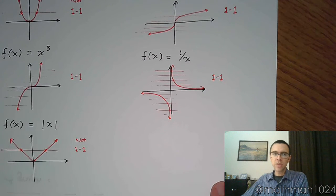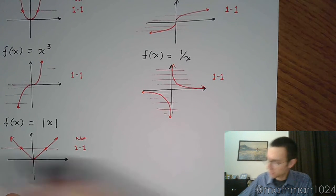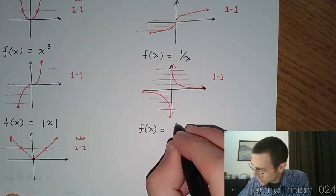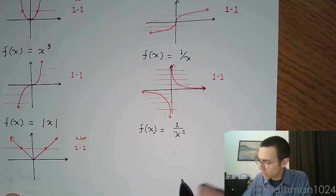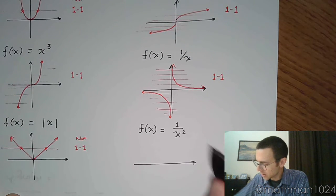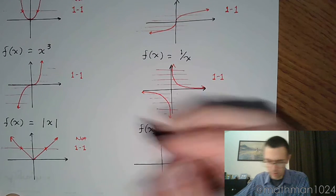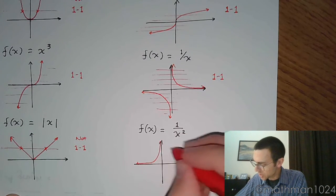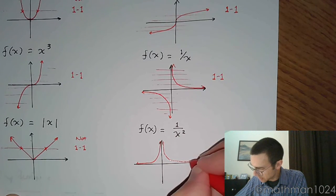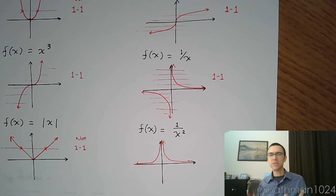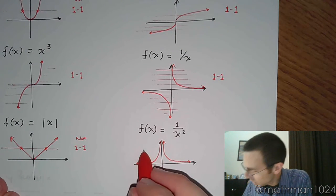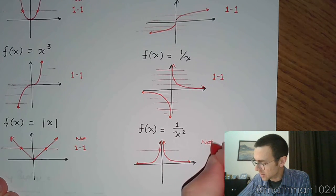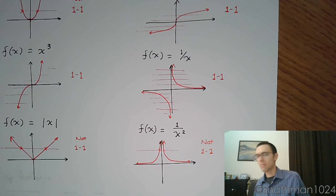And the last guy that we had, the last of our parent functions, was the reciprocal squaring function: f(x) equals one over x squared. His shape is that volcano shape. And I think it's pretty easy to see that this guy is not going to be one-to-one. You draw a horizontal line, and he ruins it for us. So this guy is not one-to-one.